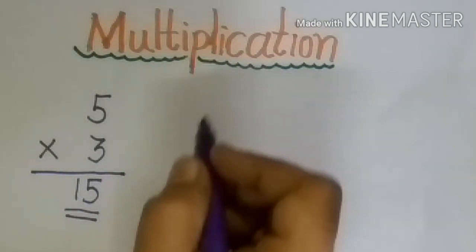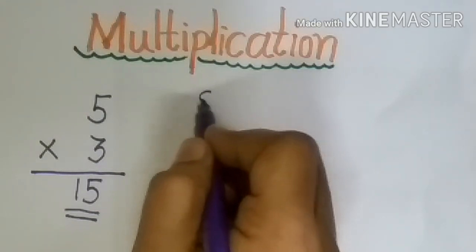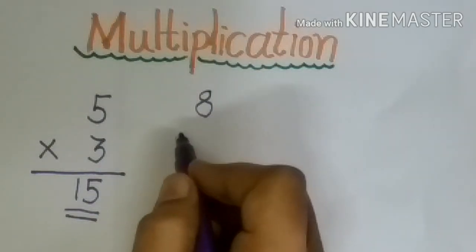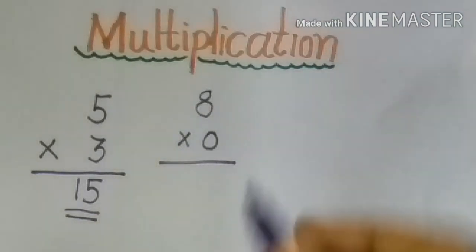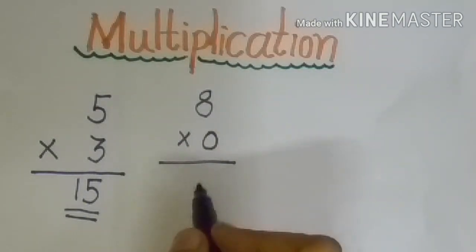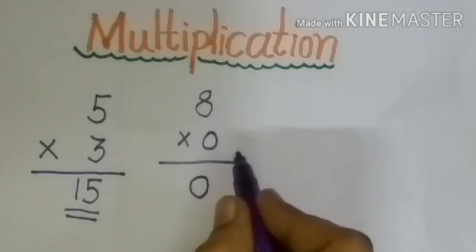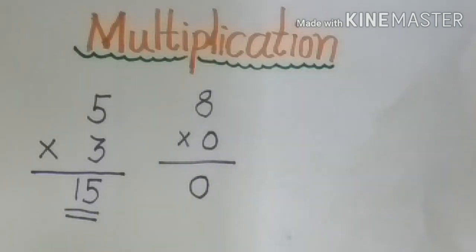[Gujarati] Next example: 8 multiply by 0. When any number is multiplied by zero, the answer is always zero.